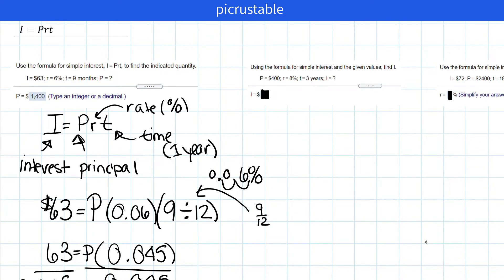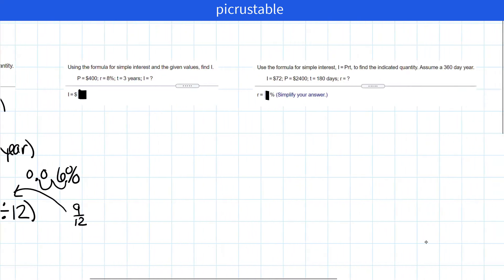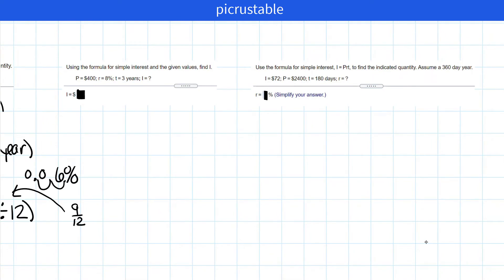And we're right. That's pretty neat. Let's look at the next one. Use the formula for simple interests and the given values. Find I. Once again, we're going to write our formula. I equals PRT.